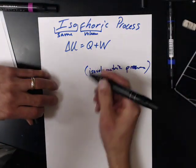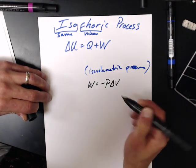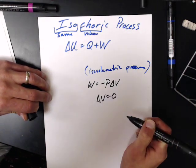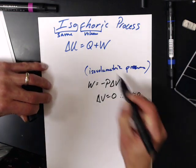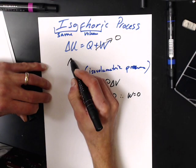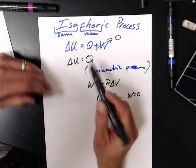So now what have we got here? Remember that work is negative P delta V. If delta V equals zero, then work equals zero. So if that goes to zero, the change in internal energy of a gas is just Q. There's no work being done.